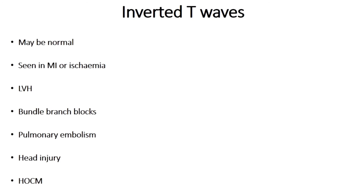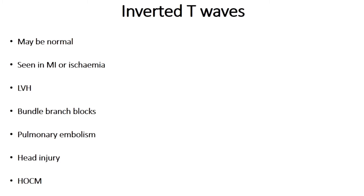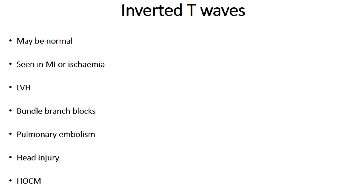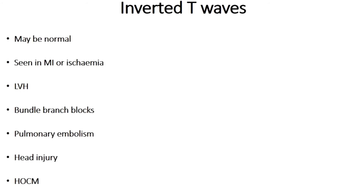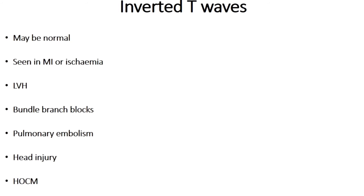You can also see inverted T waves in patients with an enlarged heart known as ventricular hypertrophy. They're also seen in bundle branch blocks and can be seen in a pulmonary embolism, where the patient typically presents with shortness of breath, maybe coughing up blood, and risk factors such as cancer, recent travel, clotting disorder, or immobility. Finally, you may see inverted T waves in patients with a head injury and raised intracranial pressure, or in hypertrophic cardiomyopathy.